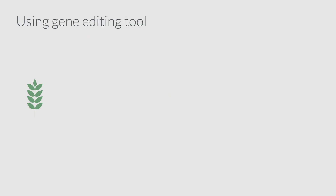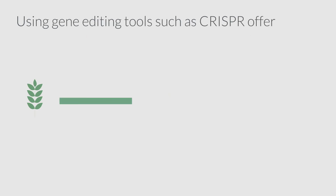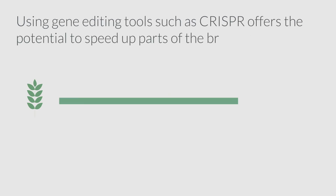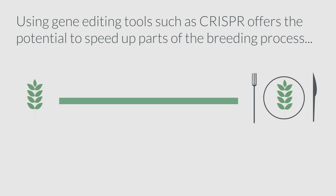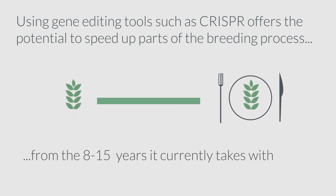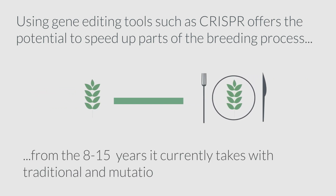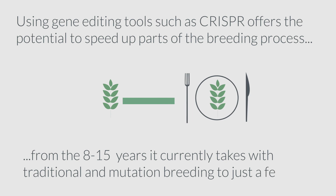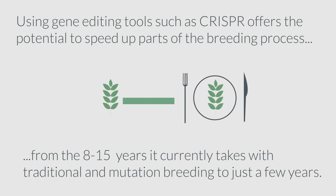Using gene editing tools such as CRISPR offers the potential to speed up parts of the breeding process, from the 8 to 15 years it currently takes for traditional and mutation breeding to just a few years.